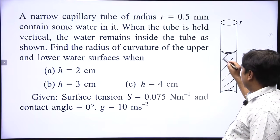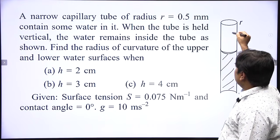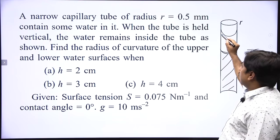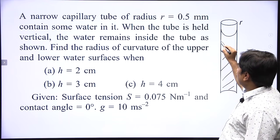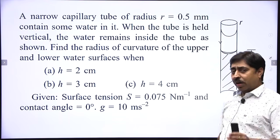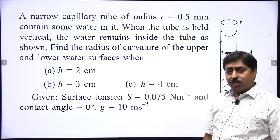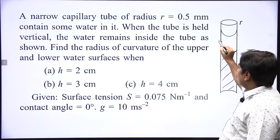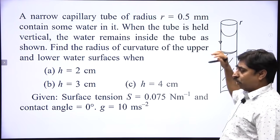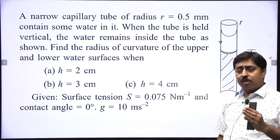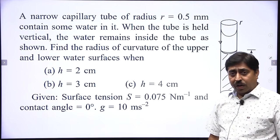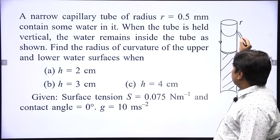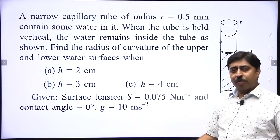What I am saying is: if this is the meniscus — drawing it separately — if you draw a tangent to the liquid surface, it should go along the tangent to the container wall, along the tangent to the tube. So the tangent drawn on the solid surface and the tangent to the liquid surface are both in the same direction, which means contact angle is 0 degrees. This also means that this meniscus is hemispherical.